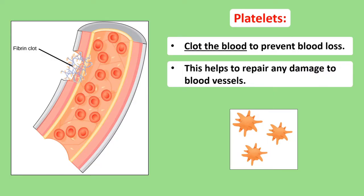Platelets are important because they can clot the blood. Think of what happens when you fall and cut your knee or graze your elbow — blood starts to leave your body through damaged blood vessels. As you can see in the image on screen, platelets immediately rush to the wound and glue themselves together around it, forming what's known as a clot and eventually a scab. The work of platelets means we don't lose too much blood from a cut, and also that germs can't make their way into your blood through an open wound.